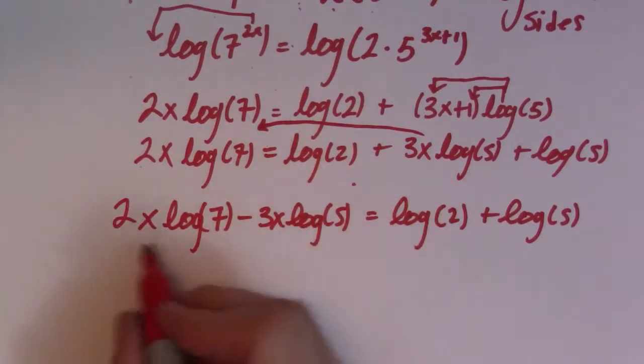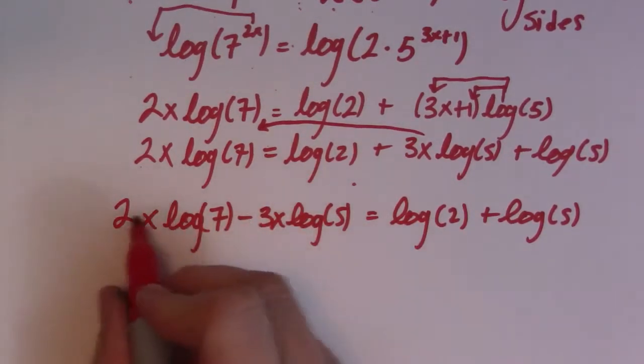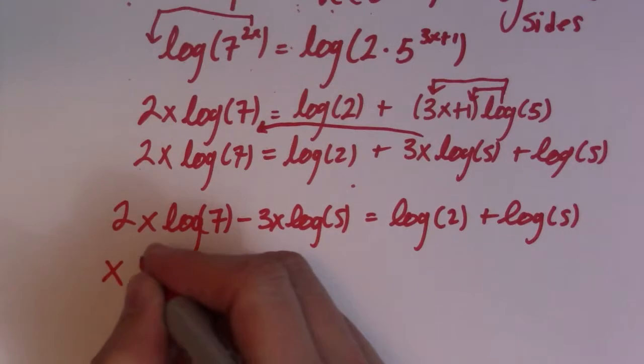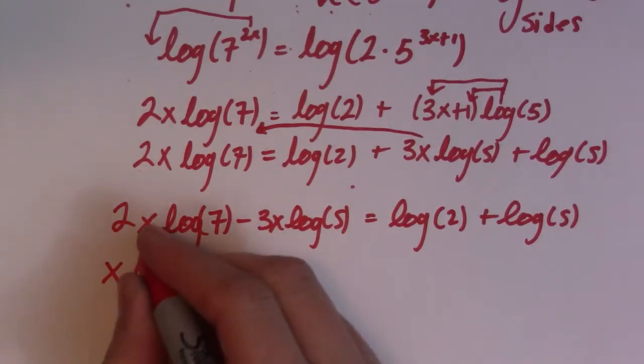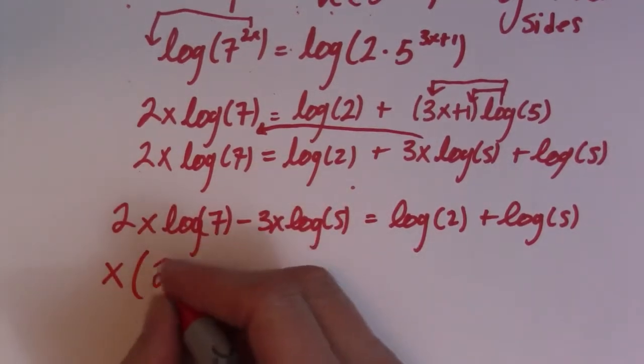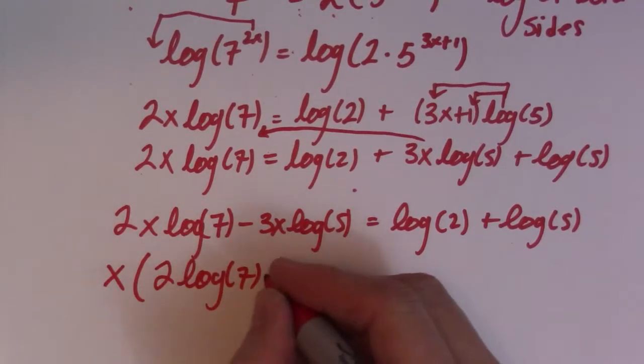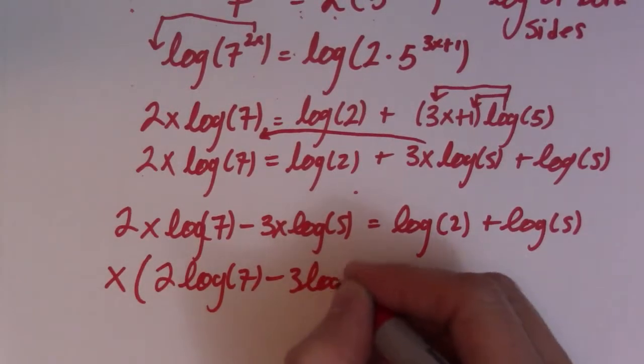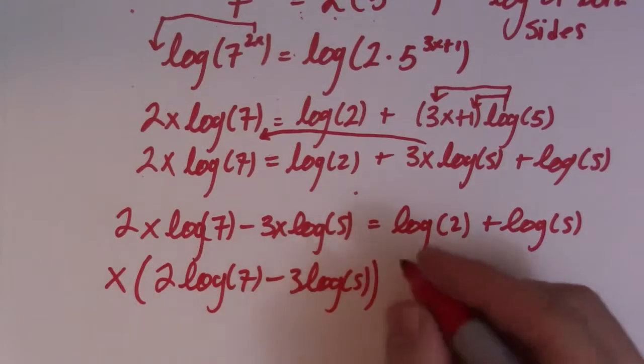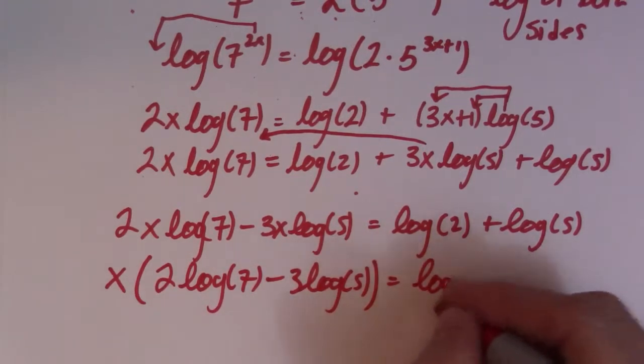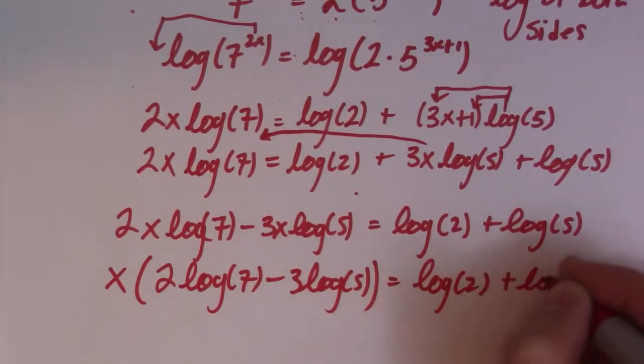So I can take an x out of both here. So that's my next step is to factor an x out of this side. So I get left with x on the outside. So this x is gone, that x is gone. So I get 2 log of 7 minus 3 log of 5. And that's equal to log of 2 log of 5.